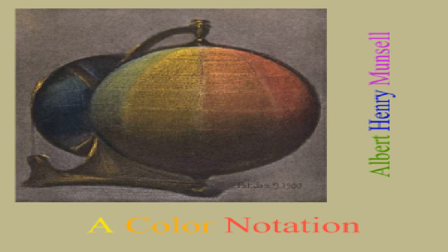A Colour Notation by Albert Henry Munsell. A measured colour system based on the three qualities, hue, value and chroma, with illustrative models, charts and a course of study arranged for teachers. Second edition, revised and enlarged.